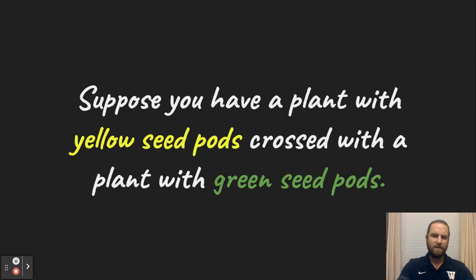Well, let's suppose we have plants. Mendel liked to use plants a lot in his experiments. So let's say you have a plant with yellow seed pods and that is crossed with a plant that has green seed pods. Yellow seeds were often recessive to green seeds. So you'd expect to see more green seeds than yellow.